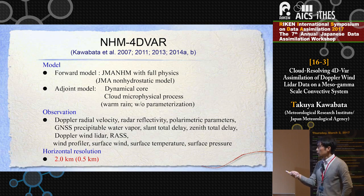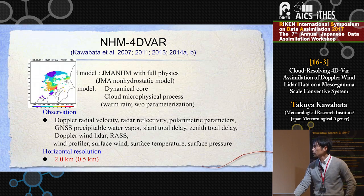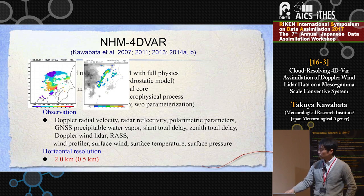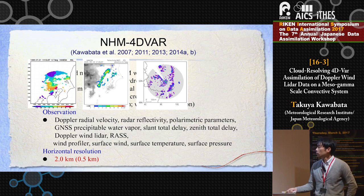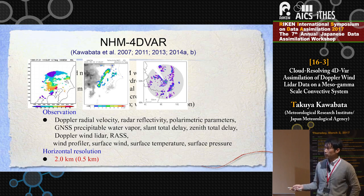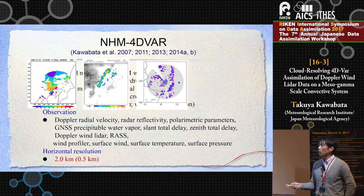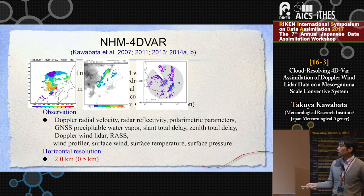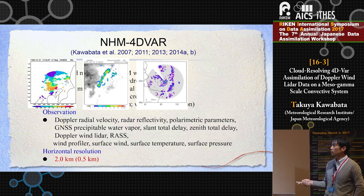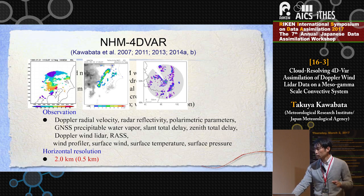Using this adjoint system, we can assimilate a lot of remote sensing data, like radial velocity, reflectivity, and polarimetric radars. We also assimilate GNSS-derived water vapor fields such as integrated water vapor, slant total delay, and zenith total delays. In this talk, I will introduce the assimilation of Doppler wind LIDAR data. Its horizontal resolution is 2km at the moment, but we are working to enhance this to 0.5km, though that is out of scope for this talk.